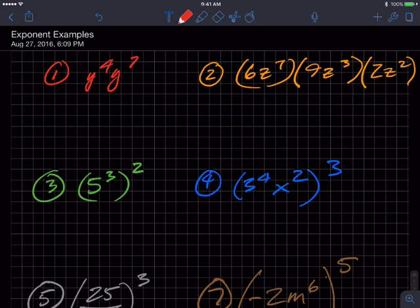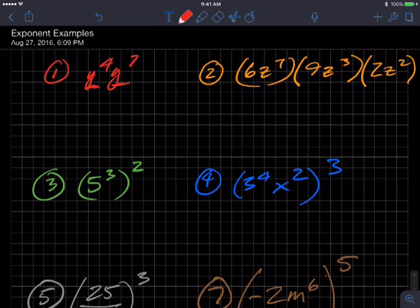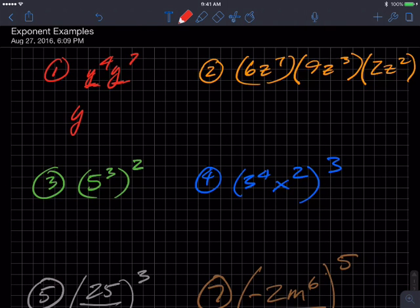Here are some quick examples to go over regarding the exponent rules, or as I say, exponent shortcuts. This first one: y to the fourth times y to the seventh. How many y's are being multiplied here and here? That would be four and seven. Add those together and you get eleven, so y to the eleventh.